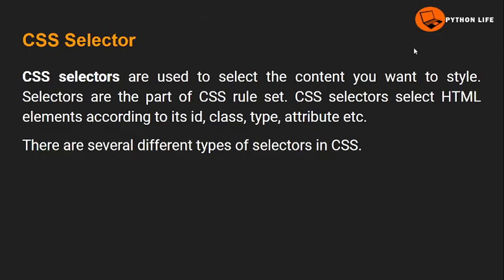Welcome to the Python Life YouTube channel. Today's topic is CSS selectors. CSS selectors are used to select the content you want to style. Selectors are part of CSS rule sets — CSS selectors select HTML elements according to their ID, class, type, attribute, and more.